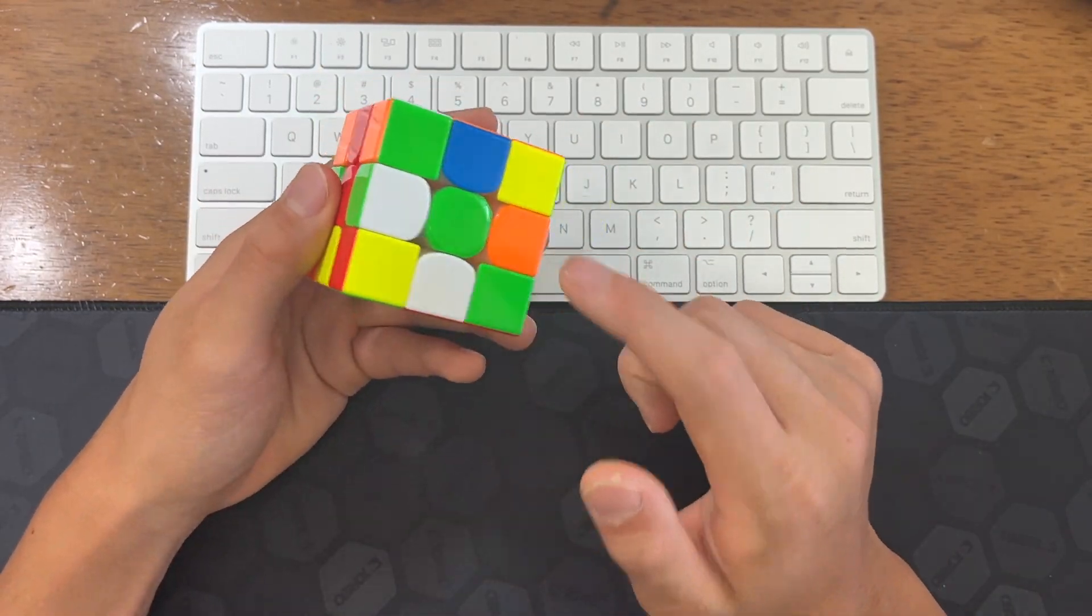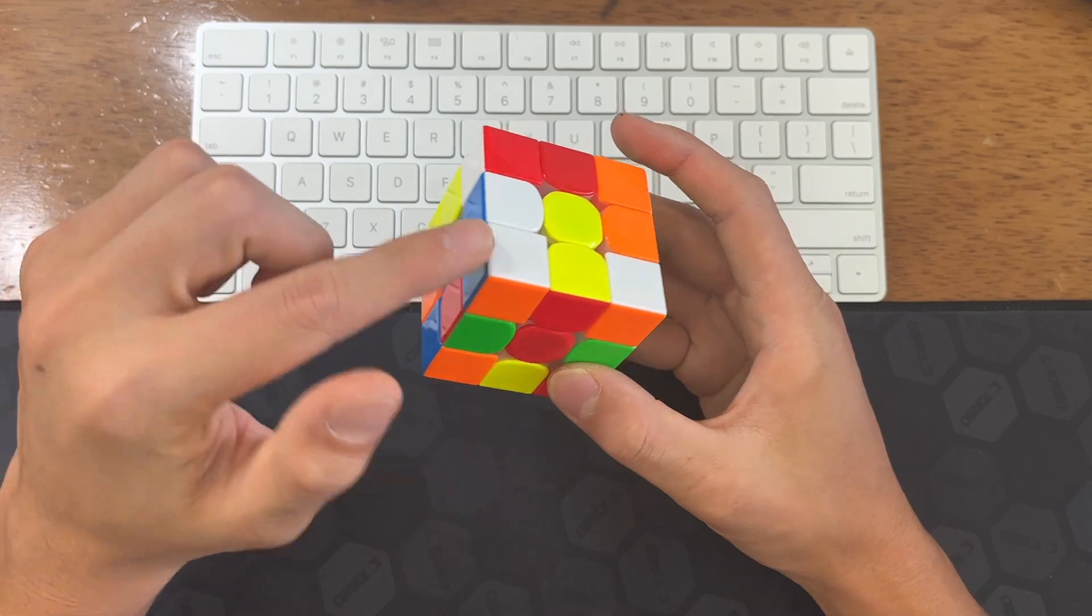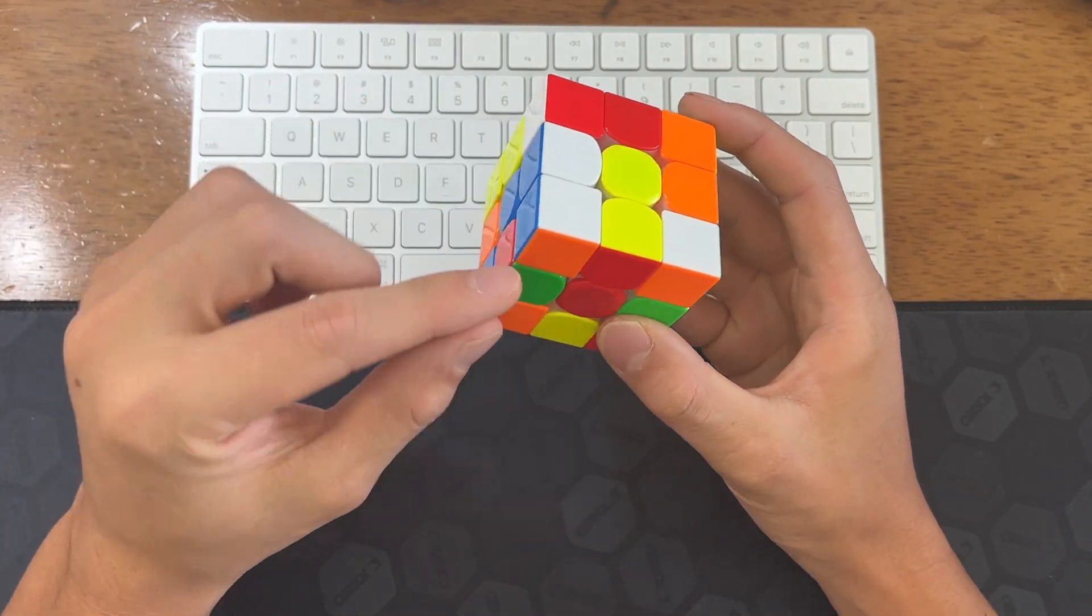Cross pieces here, here, here, and here. And we have this connected edge-corner thing.